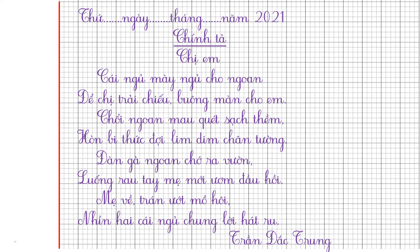Các bạn lùi vào 9 ô để viết tên tác giả: Trần Đắc Trung. Bây giờ hãy cùng lắng nghe cô đọc để dò lại một lần nữa nhé: 'Chị Em' — Cái ngủ mày ngủ cho ngoan, để chị trải chiếu buông màn cho em. Trỗi ngoan mau quét sạch thềm, hòn bi thức đợi liêm diêm trên tường. Đàn gà ngoan chớ ra vườn, luống rau tay mẹ mới ươm đầu hồi. Mẹ về tráng ướt mồ hôi, nhìn hai cái ngủ chung lời hát ru. Trần Đắc Trung.